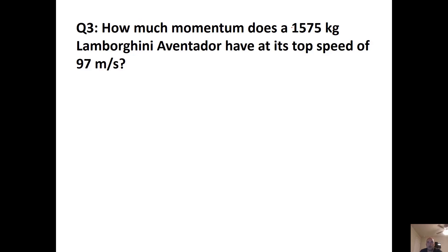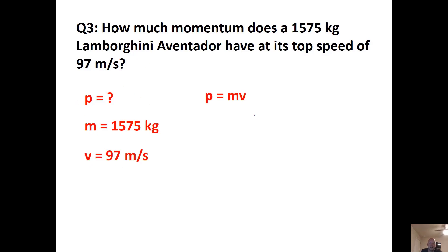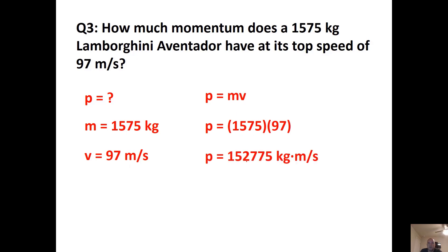How much momentum does a 1,575 kg Lamborghini Aventador have at its top speed of 97 m/s? Write down the variables, and multiply mass times velocity to get 152,775 kg·m/s, which in scientific notation is 1.5 × 10⁵ kg·m/s.